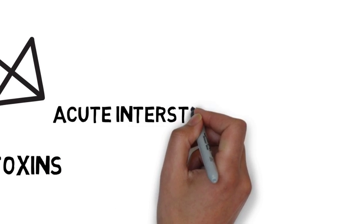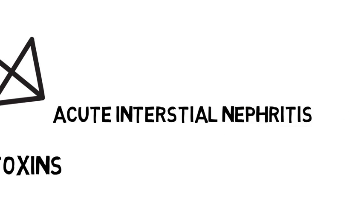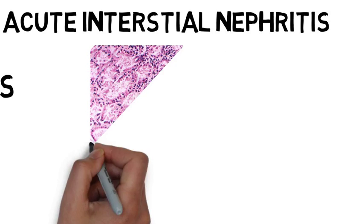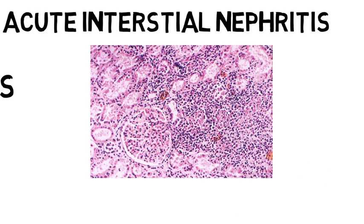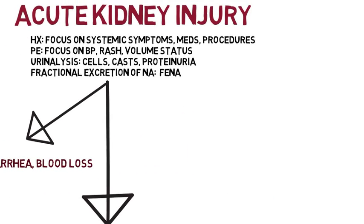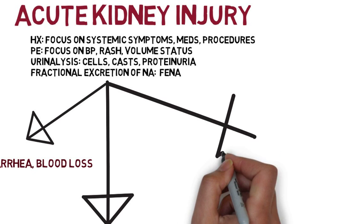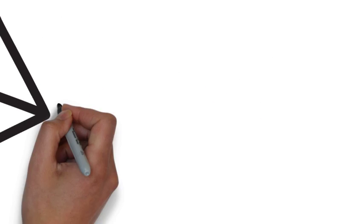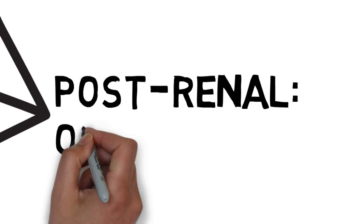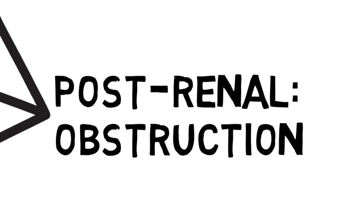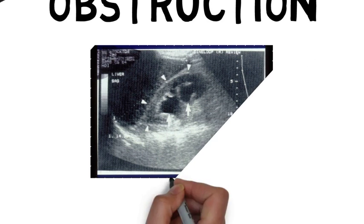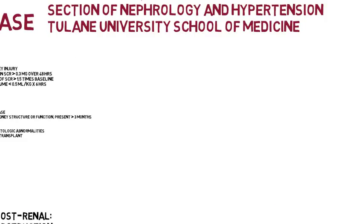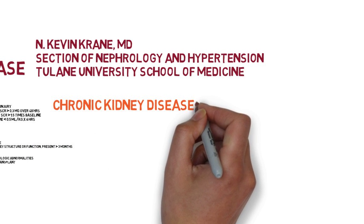Finally, there is acute interstitial nephritis, a hypersensitivity reaction often related to drugs, though there are other causes, in which patients develop acute kidney injury. Infiltration of the interstitium with eosinophils is characteristic. The last form of acute kidney injury is postrenal, or obstruction — anything obstructing the urinary tract can lead to dilatation of the calyceal system of the kidney. The urinalysis tends to be relatively benign, and it's important to always consider obstruction when evaluating these patients.